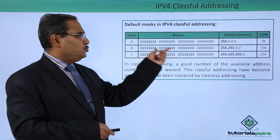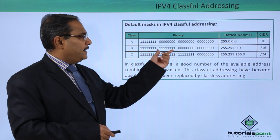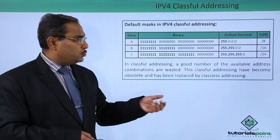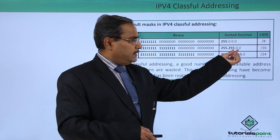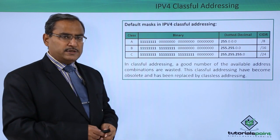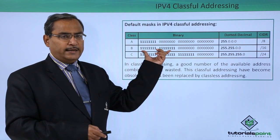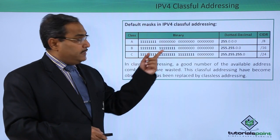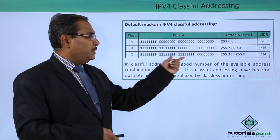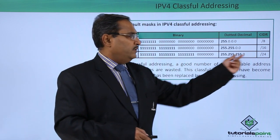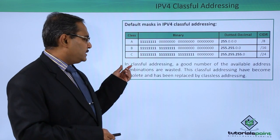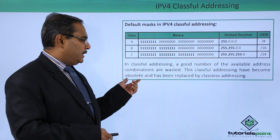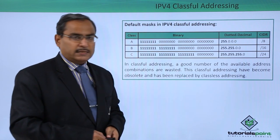For Class B, 2 bytes (16 bits) are for the net ID, so the subnet mask has 8 ones, then 8 ones, then 8 zeros, then 8 zeros: 255.255.0.0, also written as /16. For Class C, 24 bits denote the net ID, giving a subnet mask of 255.255.255.0, also written as /24. In classful addressing, a significant number of available address combinations are wasted, which is why classful addressing has become obsolete and has been replaced by classless addressing.